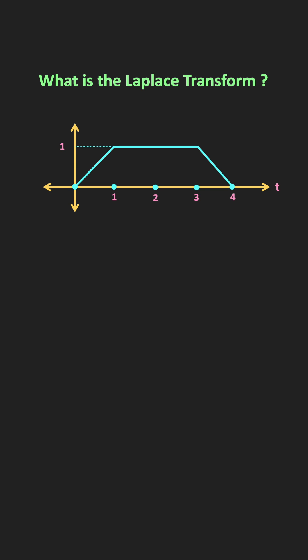Let us find out what is the Laplace transform of this trapezoidal function. For that, first of all let us find its mathematical expression. From 0 to 1, if you see this function, it is nothing but the ramp function with slope equal to 1. So we can say that for this time period, this function is equal to R, where R is the ramp function.